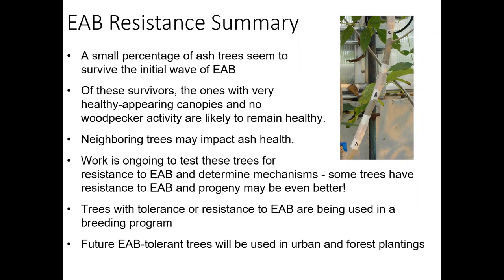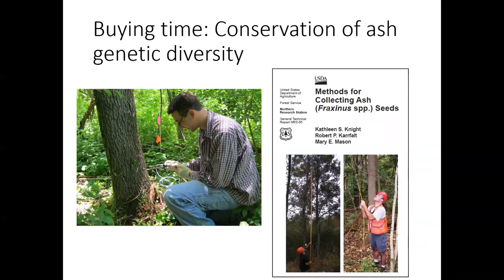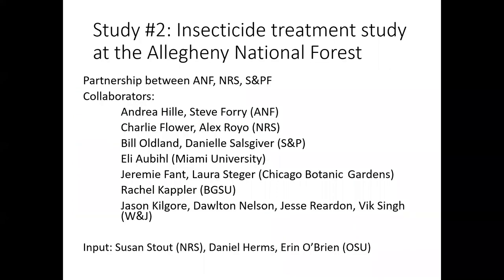So what can we do in the meantime while we're waiting for these trees? That leads into the next portion of my talk — some of the work we're doing on conservation of ash genetic diversity. This is Charlie Flower, one of my collaborators. We've done a few studies, one of which is an insecticide treatment study at the Allegheny National Forest. We have a number of partners on this study at the Northern Research Station, as well as the Allegheny National Forest and state and private forestry partners and multiple universities.